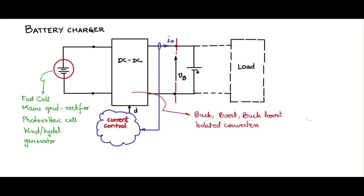In a DC-DC converter, the output voltage — the voltage across the output — can be regulated, and we also saw how to do closed loop operation. In this battery charging application, we need to control the charge current being pumped into the battery. It is a slightly different nature of control where you are controlling the current — the output current. In the case of a buck converter, the output current and the inductor current are the same. In many cases, the inductor current — the state — is controlled, which will indirectly control the output current.